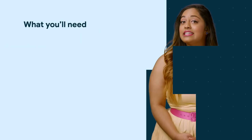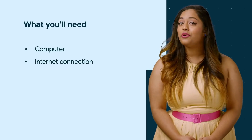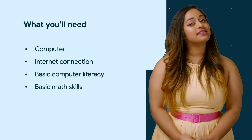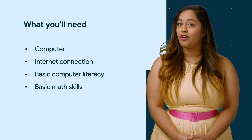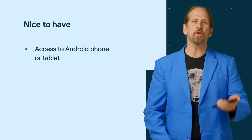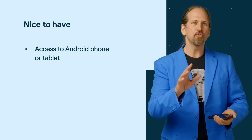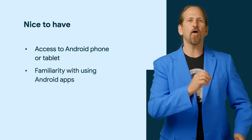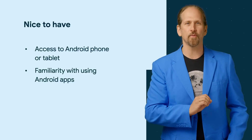But first, let's talk about what you need to start this course. To get started, you need a computer and an internet connection so you can download Android Studio. You don't need any prior programming experience, but we do require that you have basic computer and math skills. Knowing basic math is useful when you are programming because of the problem-solving skills involved. It's also helpful to have an Android device — phone or tablet — to test your app on. If you don't have one, that's OK. We'll show you how to simulate an Android device on your computer with something called an emulator. It's also great to be familiar with using Android apps; if you haven't used Android before, you'll learn this along the way.